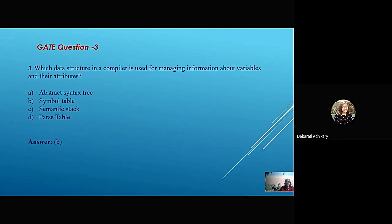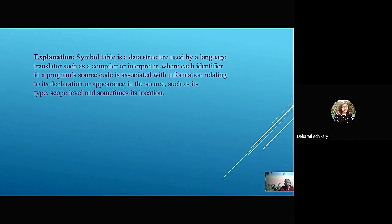Thank you, Apoorbu. Question number 3: Which data structure in a compiler is used for managing information about variables and their attributes? Option A: Abstract Syntax Tree. Option B: Symbol Table. Option C: Semantics Stack. Option D: Parse Table. Here, option B, Symbol Table, is correct. Because Symbol Table is a data structure which is used by a language translator, compiler, or interpreter, where each identifier in the program is associated with information relating to its declaration or appearance in the source, such as its type, scope level, etc.